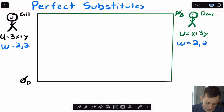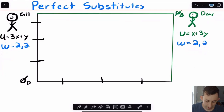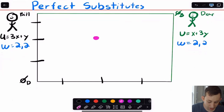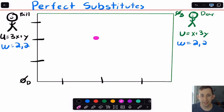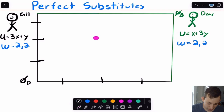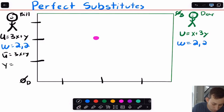For our second non-standard preference, we'll talk about perfect substitutes, again using a 2,2 endowment. Bill's utility is 3x + y and Dave's utility is x + 3y. Notice that even though they both have perfect substitutes, Bill likes X more than Y, and Dave likes Y more than X. We'll draw indifference curves through the endowment, identify different areas on the Edgeworth box, and then identify Pareto optimal points. For Bill with 3x + y, transforming to a line gives y = ū − 3x, which has a slope of negative 3.